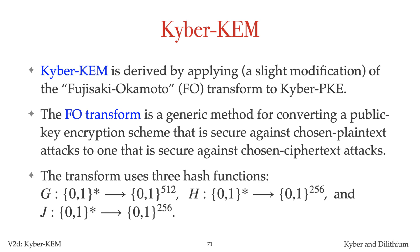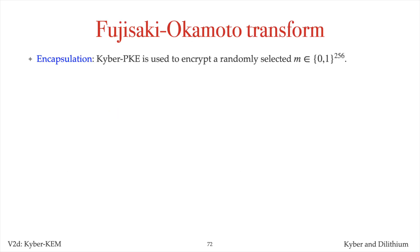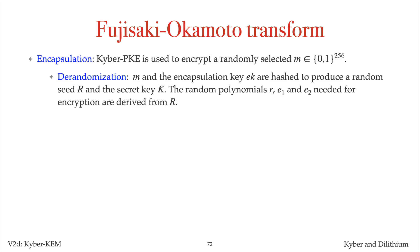The transform uses three hash functions: g, h, and j. The Kyber public key encryption scheme is used to encrypt a randomly selected bit string m of length 256. Encapsulation uses derandomization, whereby m and the encapsulation key ek are hashed to produce the random seed r and the secret key k. The random polynomials r, e1, and e2 needed for encryption are derived from r, converting the randomized encryption scheme into a deterministic one.